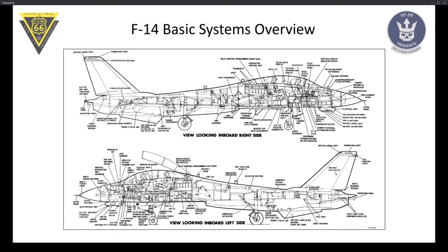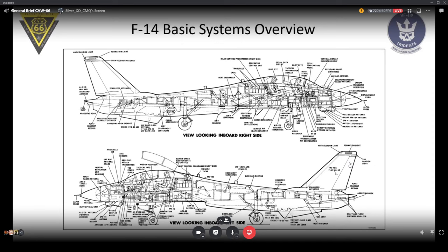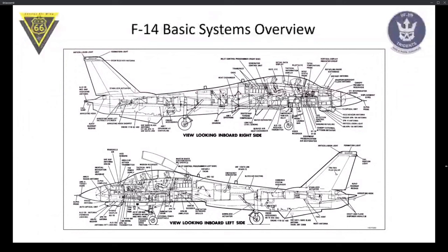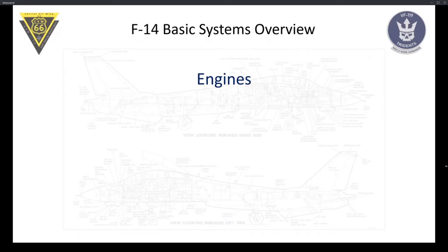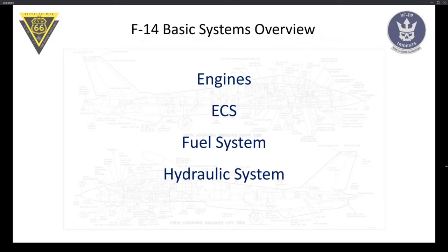Welcome to today's presentation on the F-14 systems. The Tomcat is a complex aircraft but it's pretty hands-off when operating the various systems because it has a lot of automation. By just flying the aircraft you might not get a sense of what's actually working in the background. It also has a lot of redundancy which is largely automated, but there are some things you need to know in case things fail.